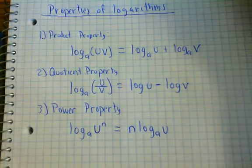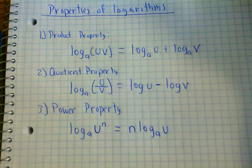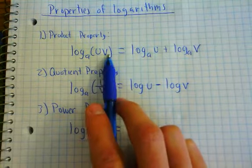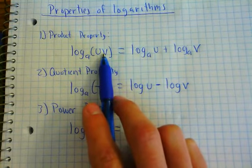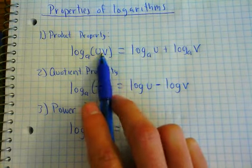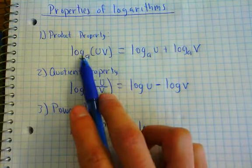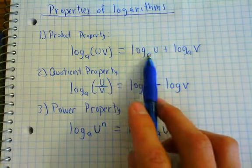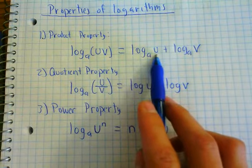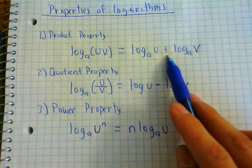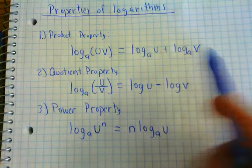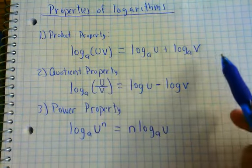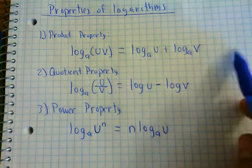Let's talk about each one of these properties individually. The first property is called the product property. We have a logarithm with some base, and as you notice, we have two things multiplied together — we'll call them u and v, which could be expressions or numbers. What you can do is split it into two different logarithms: log base A of u plus log base A of v. This doesn't have to be just two terms — if you have u times v times w, you'd add a third logarithm, log base A of w, and so on.